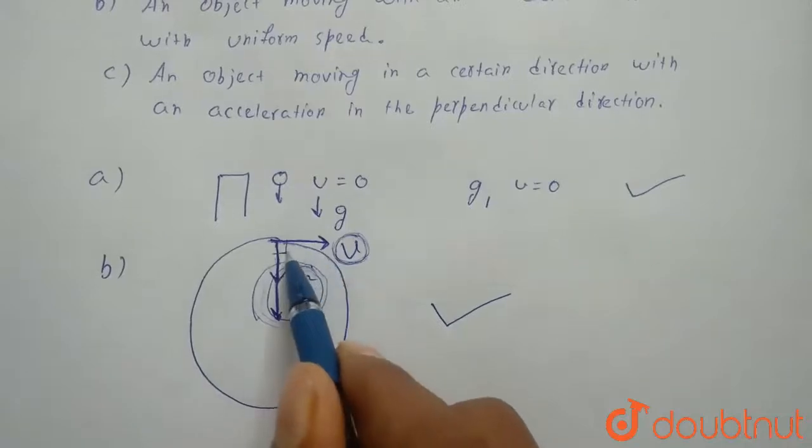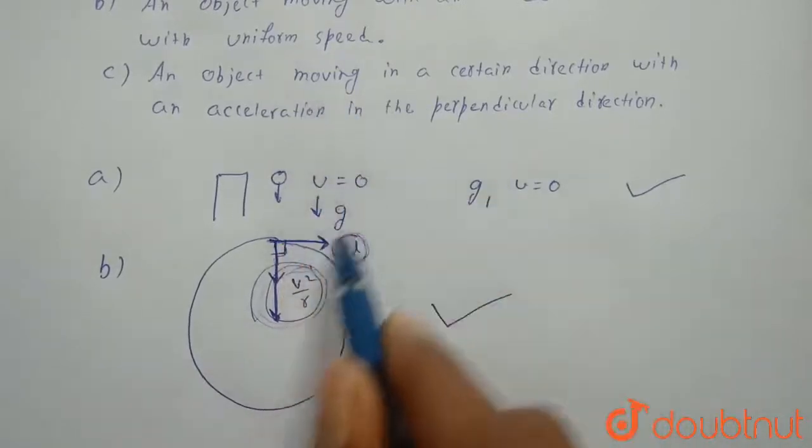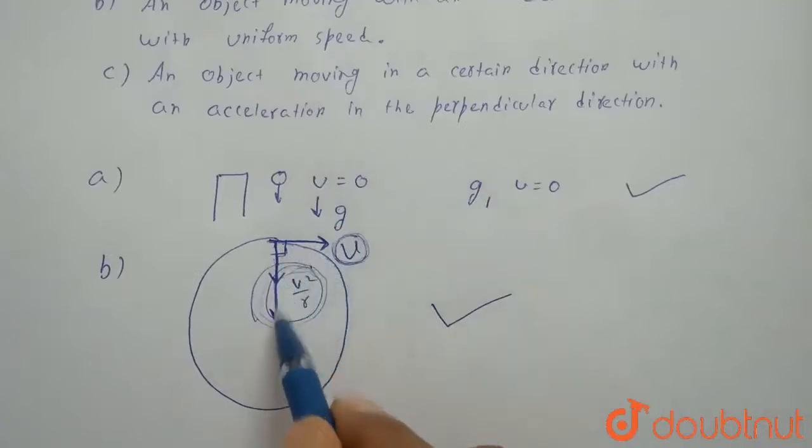We have AC towards center and the object moves tangentially. So angle between AC and V is 90 degrees.